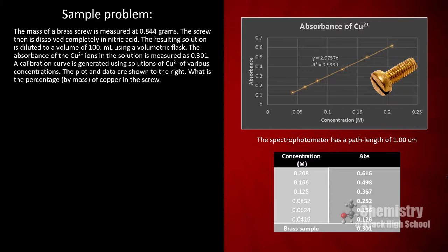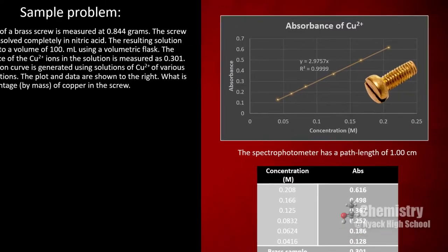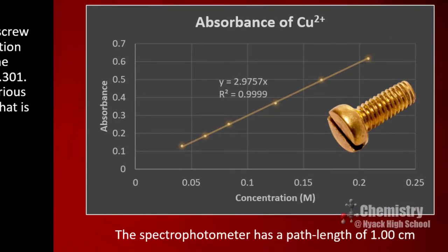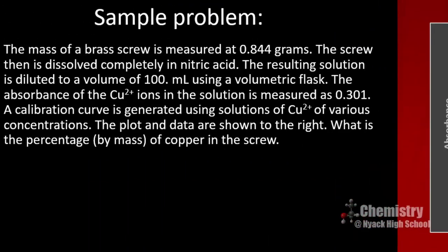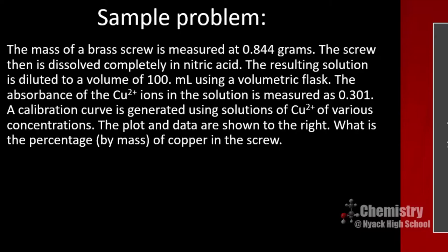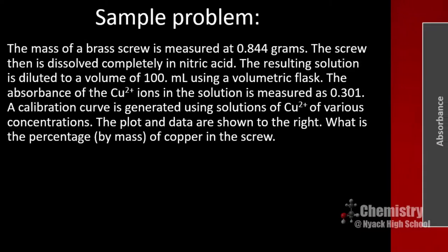On the screen is data very similar to what you will use to calculate the mass of copper in your sample. To the right is the calibration plot, which shows the concentrations of various copper 2+ ion solutions plotted against their absorbances. The problem reads: the mass of a brass screw is measured at 0.844 grams. The screw is dissolved completely in nitric acid. The resulting solution is diluted to a volume of 100 milliliters using a volumetric flask. The absorbance of the copper 2+ ions is measured at 0.301. What is the percentage by mass of copper in the screw?